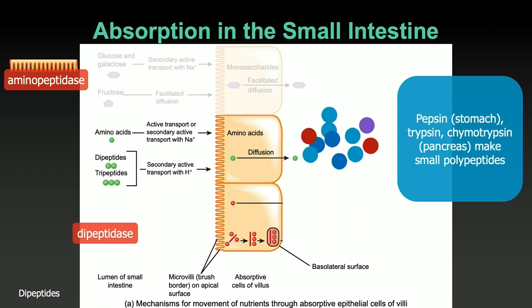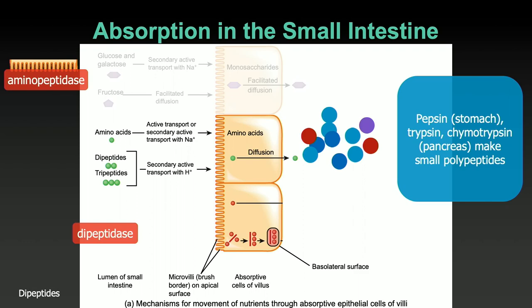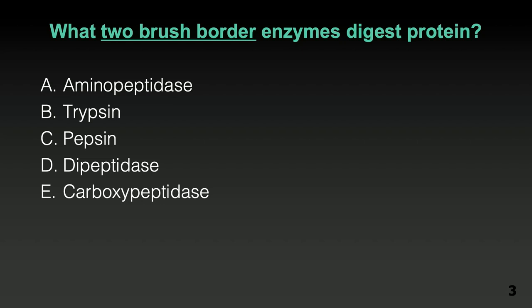What are the two brush border enzymes that digest protein in the small intestine? There are other protein-degrading enzymes on this list, but they're not necessarily brush border enzymes. The large majority got aminopeptidase — correct — and dipeptidase — correct. Trypsin is a protein-degrading enzyme; pepsin, of course; carboxypeptidase — I mentioned that, it's the evil twin of aminopeptidase.